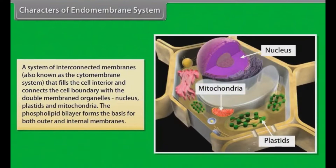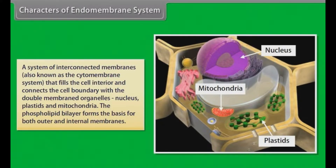Characters of endomembrane system. A system of interconnected membranes, also known as the cytomembrane system, that fills the cell interior and connects the cell boundary with the double-membrane organelles — nucleus, plastids and mitochondria. The phospholipid bilayer forms the basis for both outer and internal membranes.